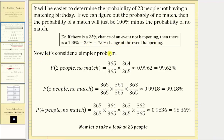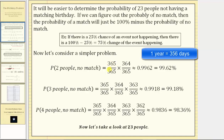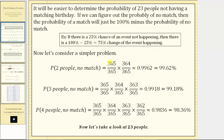Now let's consider a simpler problem and determine the probability of two people not having a matching birthday. We will find a probability for each person, and then the product of the probabilities gives us the total probability. For the first person, their birthday can be any day of the year, so the probability of not having a match is 365/365, which represents a 100% chance there is no match, because there are no other birthdays to match. For the second person, the probability their birthday won't match the first person's is 364/365, since their birthday can be any day except the first person's birthday. This product gives us the probability of two people not having a matching birthday.